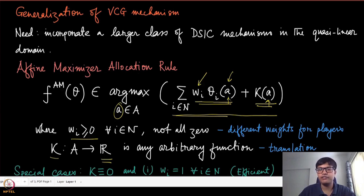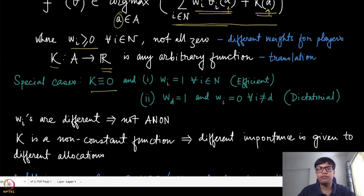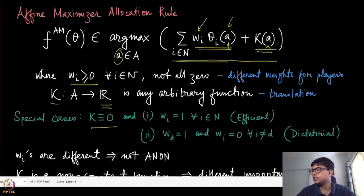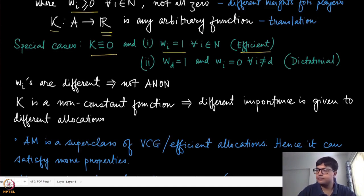There are some mechanisms we already know of, and those are special cases of this affine maximizer class. If we keep the kappa function identically equal to zero — so it is zero for all allocations — that term disappears. And if the weights are all equal to one, or identical for all agents, then the outcome is essentially the efficient outcome, which is the allocation the VCG mechanism picks.